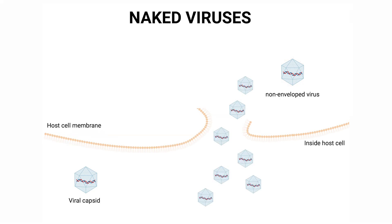On the other hand, non-enveloped viruses, like rotavirus, poliovirus, and adenovirus, lack this lipid covering. They're just the protein capsid and the genetic material inside. This simple structural difference has a huge impact on how these viruses behave.